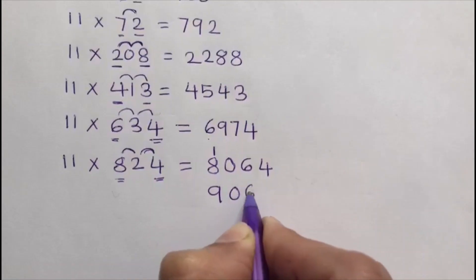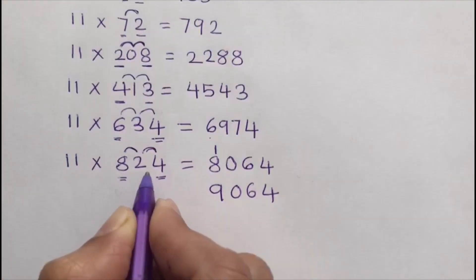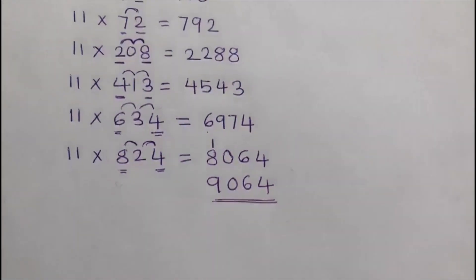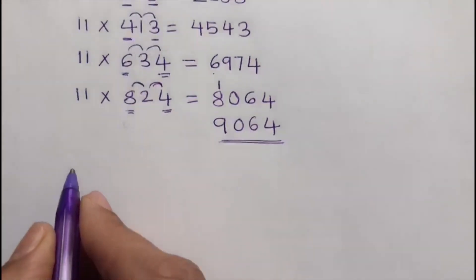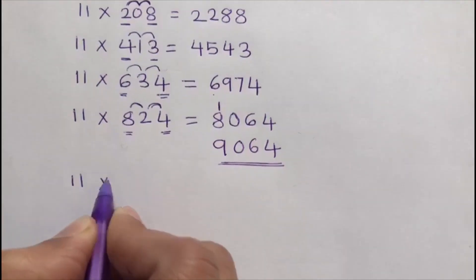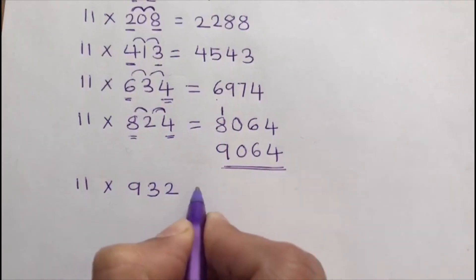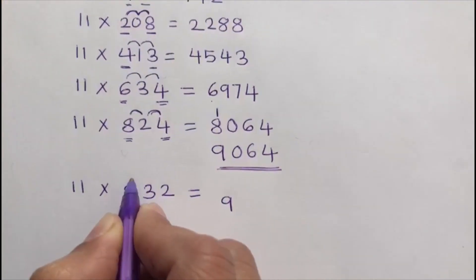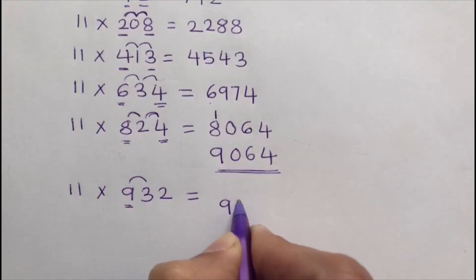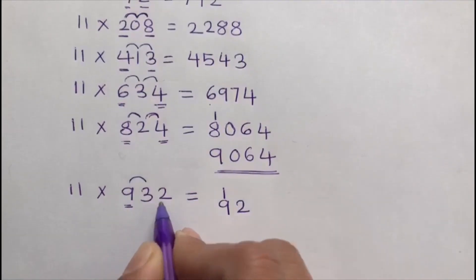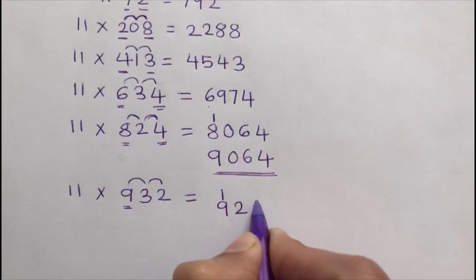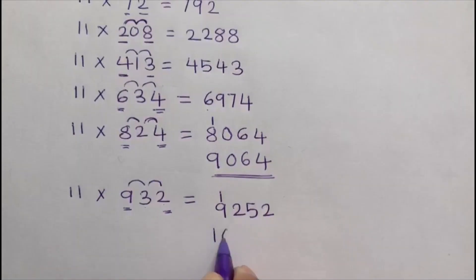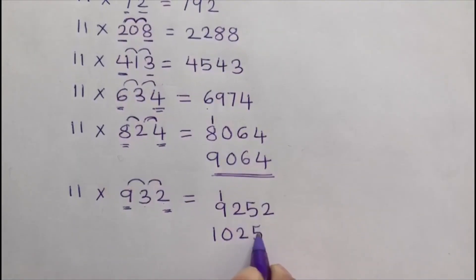But here we have to add the carried 1 to the first digit: 8 plus 1 equals 9. So 11 times 824 equals 9064. Next: 11 times 932. The first digit is 9. Add 9 and 3, which gives 12. I write 2 and carry 1. Then add 3 and 2, which gives 5. Write the last digit 2. Then add the carried 1 to 9, giving 10. So 11 times 932 equals 10252.